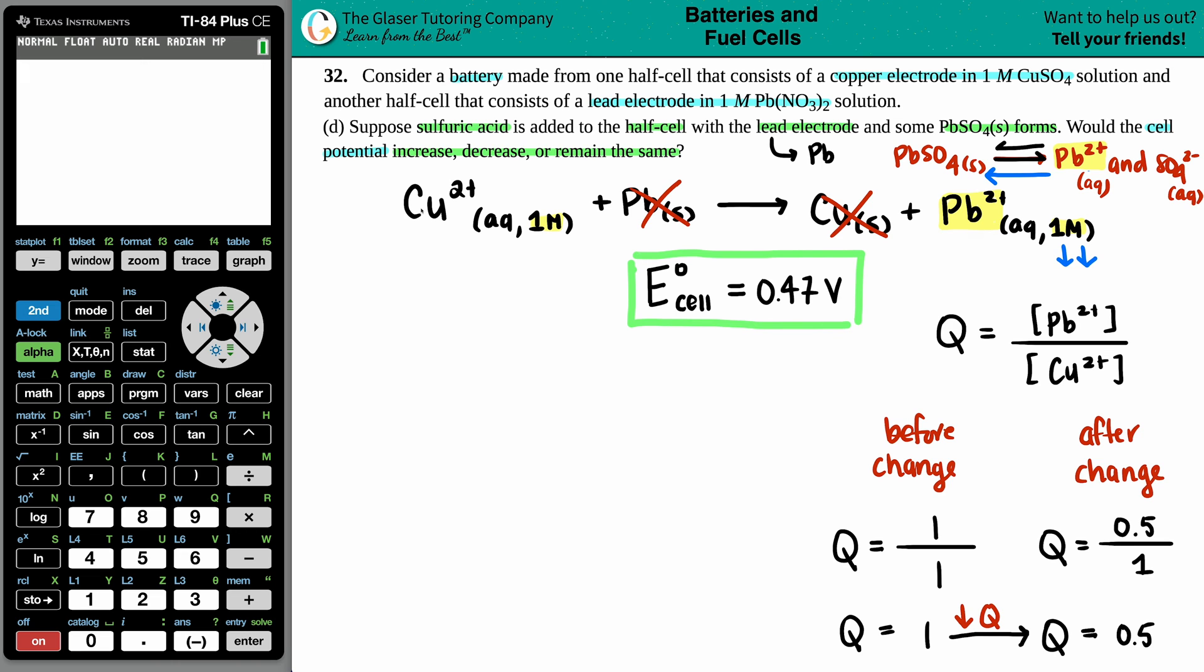We have our E_cell that is not standard equal to the standard cell potential minus RT/nF ln of Q. So basically, everything else is the same, right? The E_cell would be the same standard value. The R would be the same, the temperature, the n, and the F. Those would all be the same. The only thing that really is coming down to it is the ln of Q.